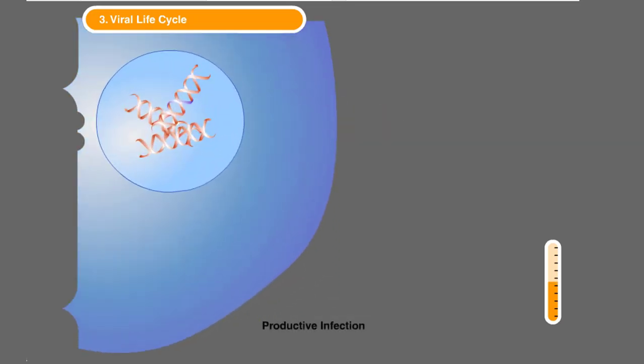Productive Infection: Then, HIV takes control of the cell's own machinery to propagate itself and produce new viral particles until the cell dies. That is, the provirus utilizes the host cell's own enzymes to make several RNA copies of itself from the integrated viral DNA.